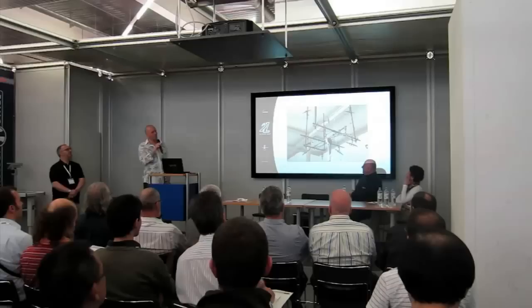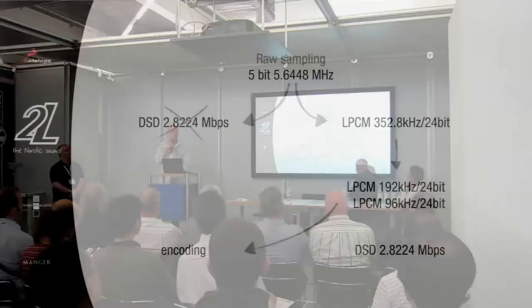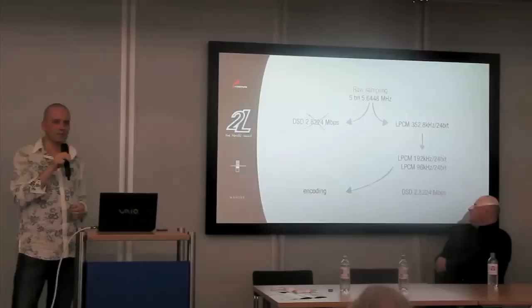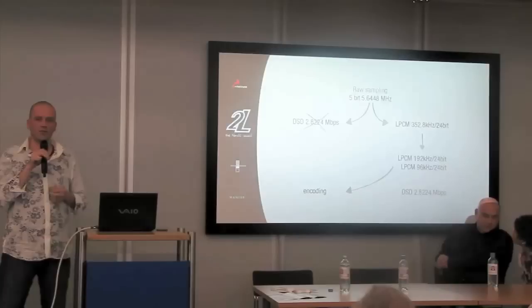What we are going to talk about here today is the A to D conversion process. Our raw sampling recording is made at 5-bit at 5.6 MHz. From this raw sampling we can either choose to format as DSD or go to high resolution PCM. As you can see I've crossed out the DSD because as a recording format it's of no use, as we can make no processing whatsoever.